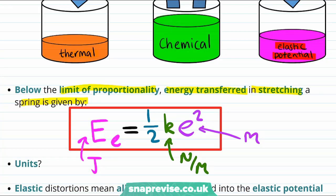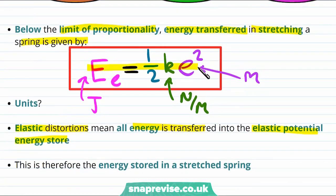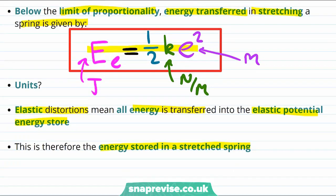So this is the energy transferred when we stretch a spring. But where is this energy going? Well, the limit of elasticity is above the limit of proportionality, so we must just be talking about elastic distortions here. But we said earlier that in elastic distortions, all of the energy is transferred into the elastic potential energy store. So that means that not only does this formula give us the energy transfer when we stretch a spring, it tells us the energy stored in a stretched spring.